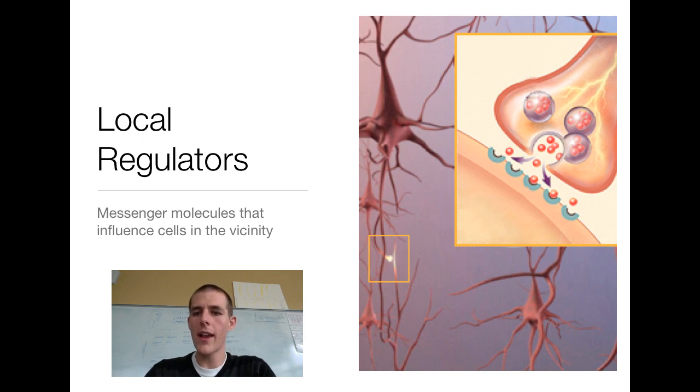If you look at your top right hand corner of the diagram there, we've got a neuron passing some signal molecules to a cell that is right next to it. So that would be an example of a local regulator. The molecules are the regulators.